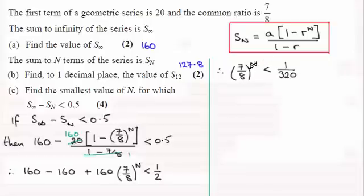Now when we've got to solve this inequality where the unknown is a power, it's best to use logs rather than trial and improvement. So if we take logs to both sides in base 10 and use the power rule for logs, I can bring the power out to the front and I get n times the log of 7/8 must be less than the log of 1/320.